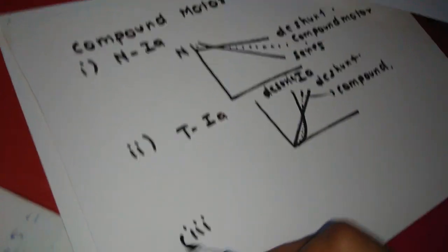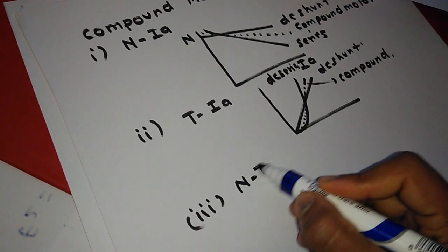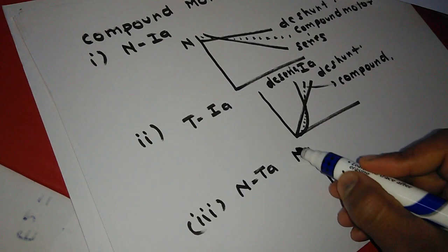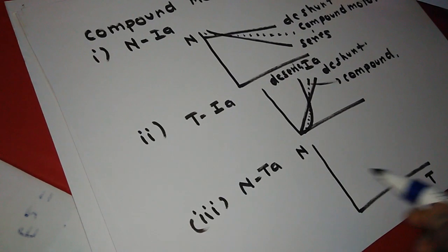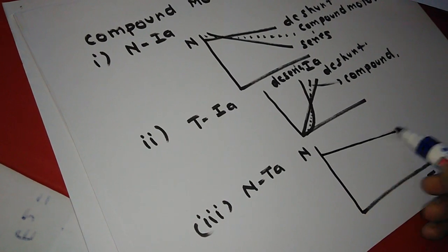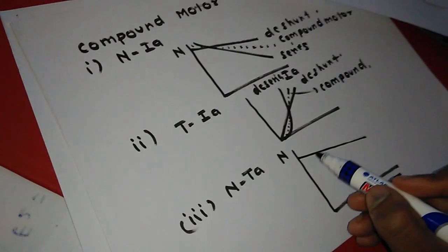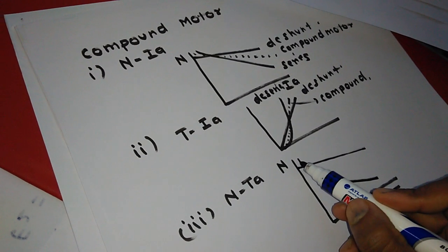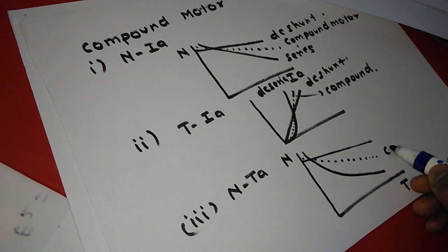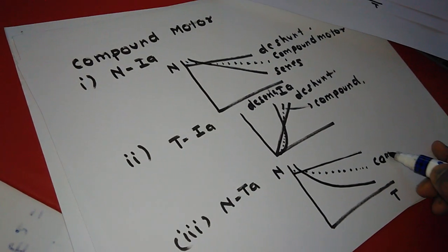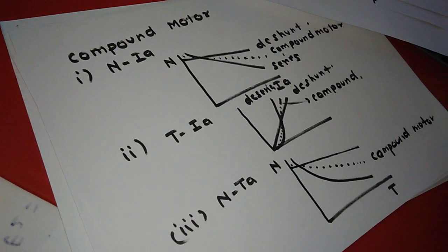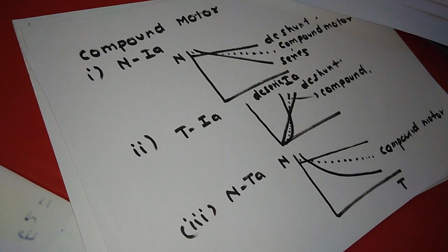Similarly, for speed versus torque, the DC shunt motor gives a drooping characteristic and the series motor gives a hyperbolic curve, so the compound motor gives a middle characteristic between the two. This is all about DC motor characteristics. Thank you.